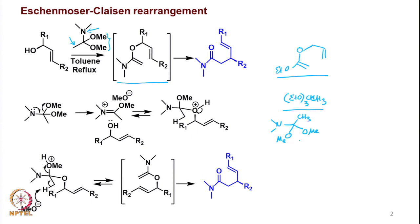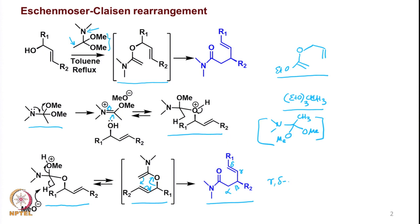We saw the mechanism: the reagent clips off, the pair of electrons attaches onto the carbon atom, and the positive charge gets neutralized to form an intermediate which loses a proton to give another intermediate that upon rearrangement leads to the product — a gamma,delta-unsaturated amide, specifically a tertiary amide. The reaction is not done under acidic conditions but simply by refluxing in xylene.